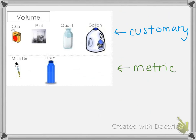Next, we're going to look at liquid volume. Liquid volume measures how much liquid a container can hold — you might also see it written as the capacity of an object. Again, we have customary and metric. The customary ones are a cup, a pint, a quart, and a gallon. For the metric, we have a milliliter and a liter. These are the most common ones that we use.